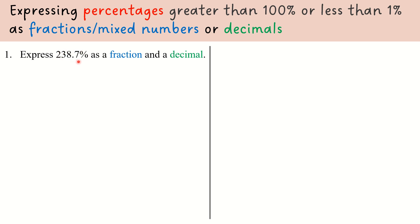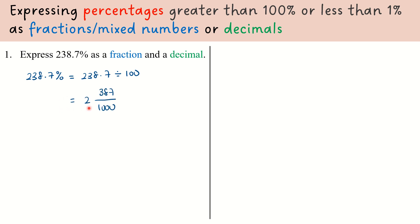Looking at this first example, we want to express 238.7% as a fraction and a decimal. Because this is a percentage value, to convert it into a fraction we divide 238.7 by 100. Using the calculator, you get 2 and 387 over 1000 — that is a mixed number. Using the calculator function, you can also conclude it equals 2.387. So this is how we convert a percentage greater than 100 into a fraction, mixed number, or decimal.